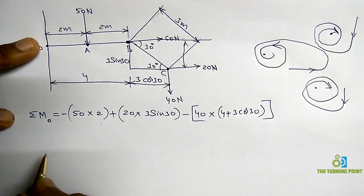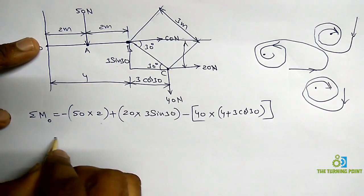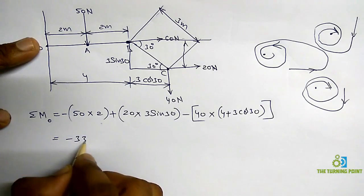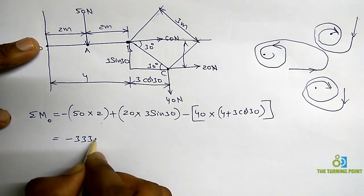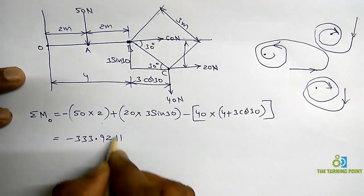Simplifying, you will get the value for the moment about O, which is approximately minus 333.92 Newton meters.